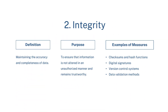Integrity — definition: maintaining the accuracy and completeness of data. Purpose: to ensure that information is not altered in an unauthorized manner and remains trustworthy. Examples of measures include checksums and hash functions, digital signatures, version control systems, and data validation methods.